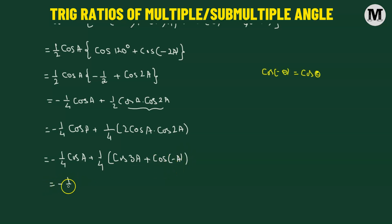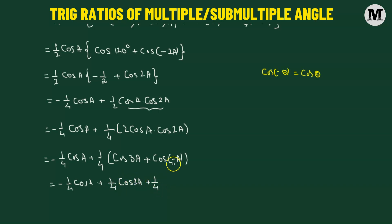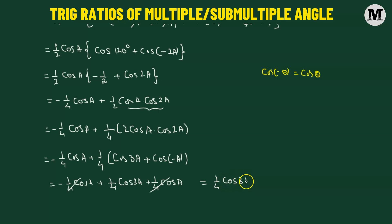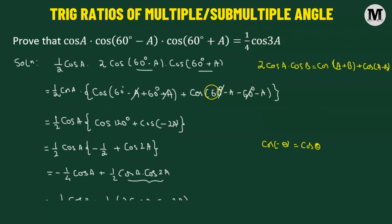This equals negative one quarter cosine of angle A, plus one quarter of cosine of angle 3A, added to one quarter of cosine of negative A. But cosine is an even function, so we simply get cosine of angle A. The last term and the first term cancel out, and that leaves us with one quarter times cosine of angle 3A. Hence we have successfully shown that cosine of A times cosine of (60° minus A) times cosine of (60° plus A) is given by one quarter of cosine of 3A.